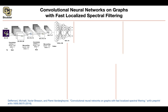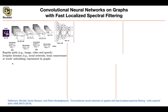Let's take an image. An image, you can turn it into a graph, and I'm going to tell you how. It's going to give us some intuition of why we call this convolution. Something like an image, a video, speech, or text, you can put on a regular grid. For irregular domains like social networks, brain connectomes, or word embeddings, you can represent them by a graph or multiple graphs.